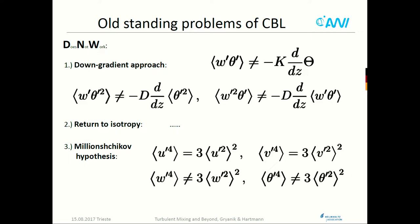Because all these features in high-order closure models — where brackets mean ensemble average, and in LES it's area averages — everything comes from the Millionshikov hypothesis. It's the same for kinetic equation closure models. I will analyze only these problems.